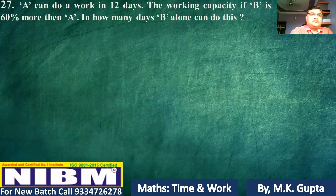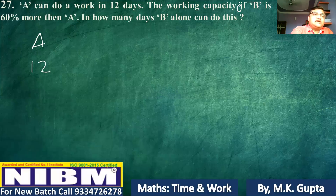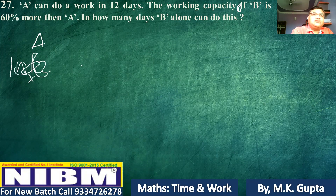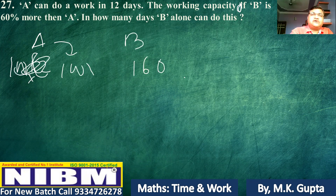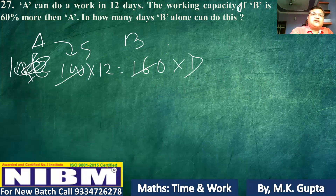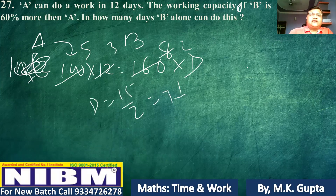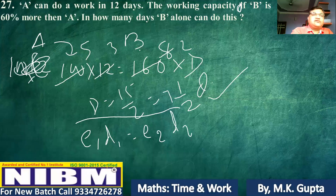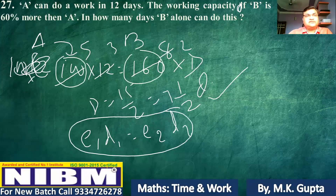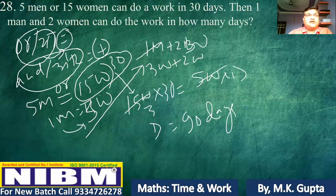Next question: The working capacity of B is 60% more than A. So if A's efficiency is 100, then B's efficiency is 160. If A takes 12 days, using E1 D1 equals E2 D2, B takes 100 into 12 divided by 160, which gives 15 by 2, that is 7 and a half days.